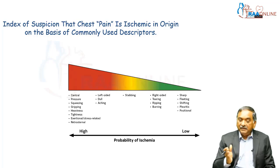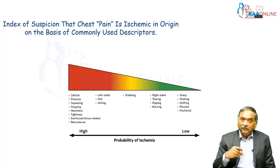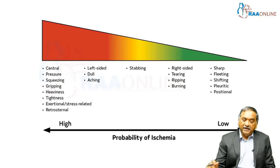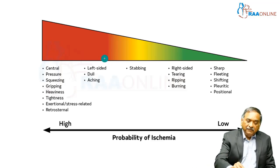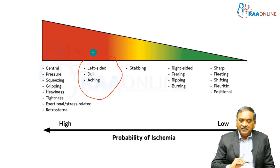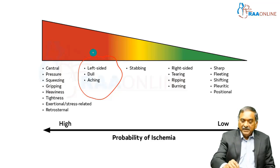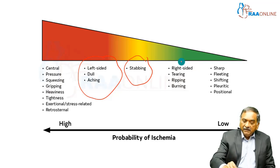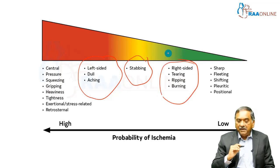This is the descending order of probability that the pain might be cardiac or not cardiac. So if it is a left-sided pain, dull aching, a little less likely. Stabbing pain, a little more unlikely. Right-sided, tearing, ripping, burning — a little even less likely.